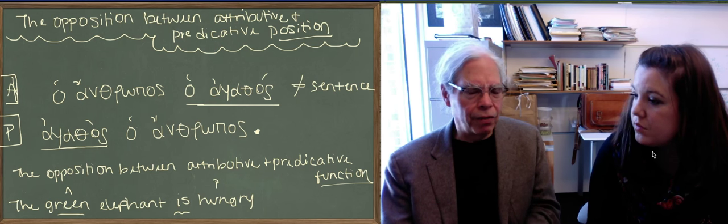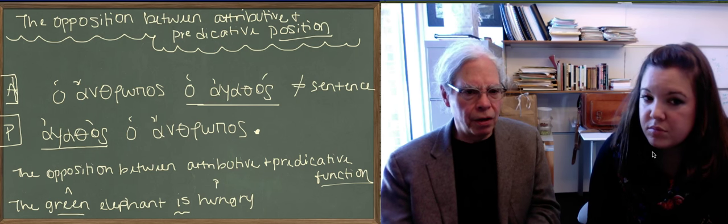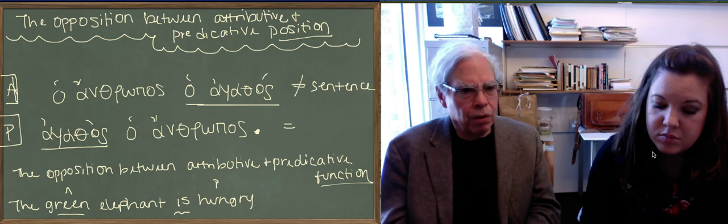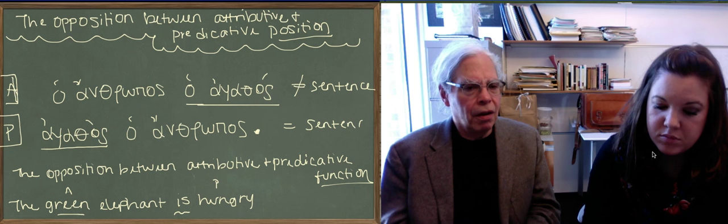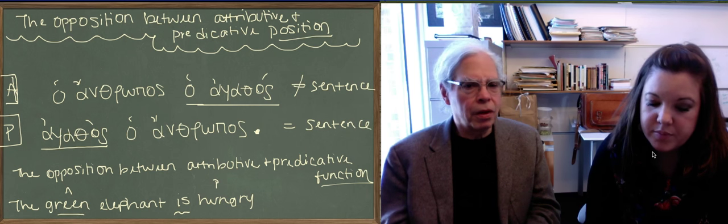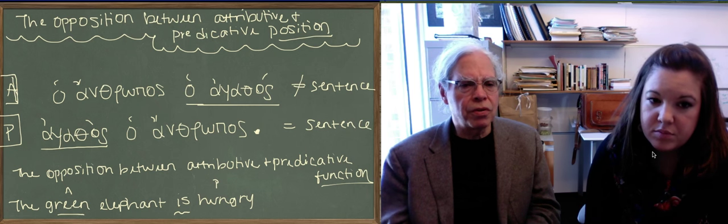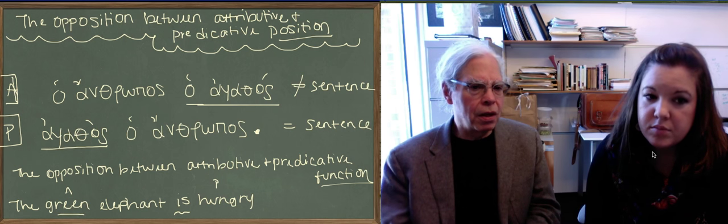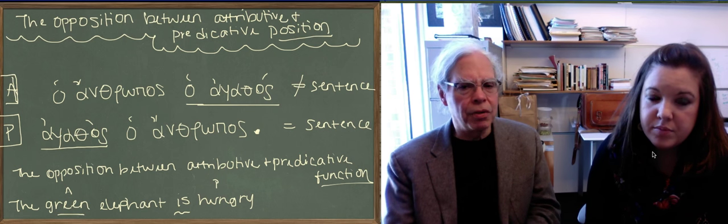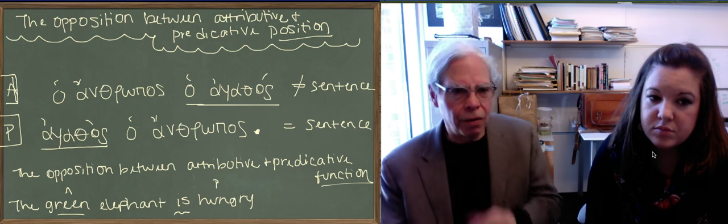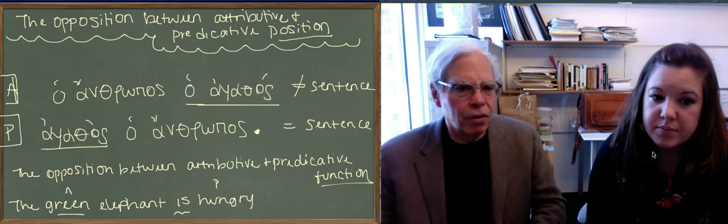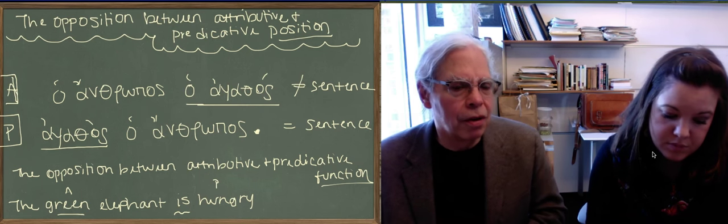But we put a period after that because agathos ha-anthropos, that agathos is not in attributive position. It is a predicate of anthropos. It's something that you, the speaker of the sentence, is saying is true about the human being. It's saying "the human being is good." Or it could be a generic statement. When you use the article with a noun, it can mean human being as a concept. So "human being is good."